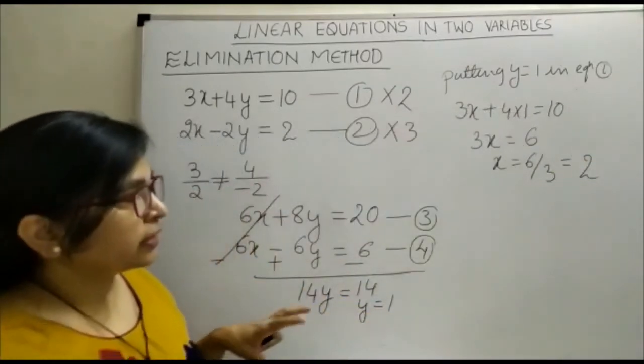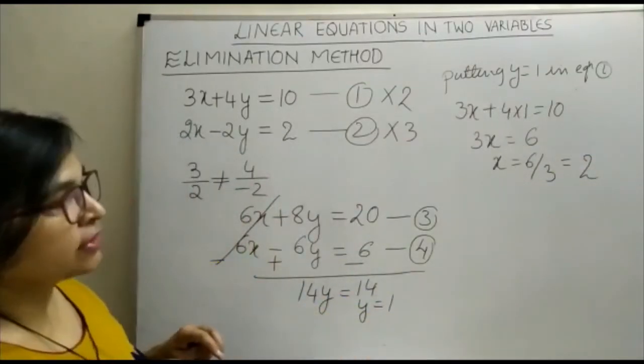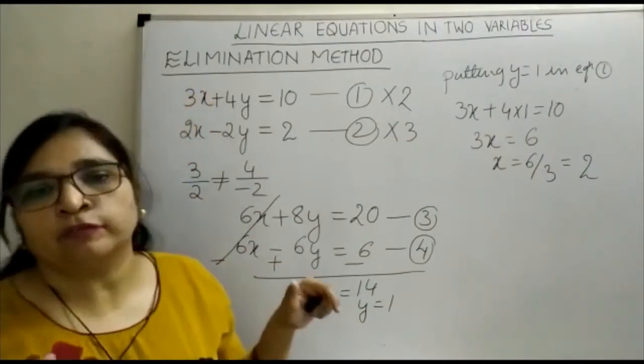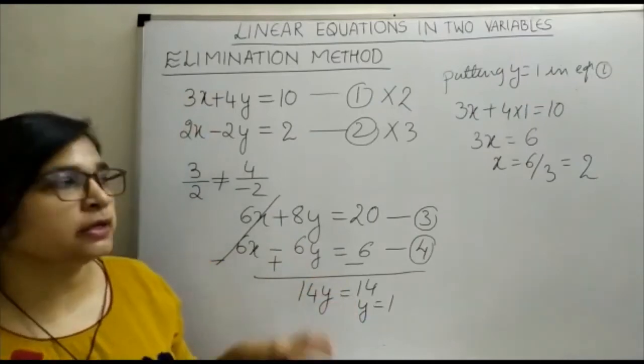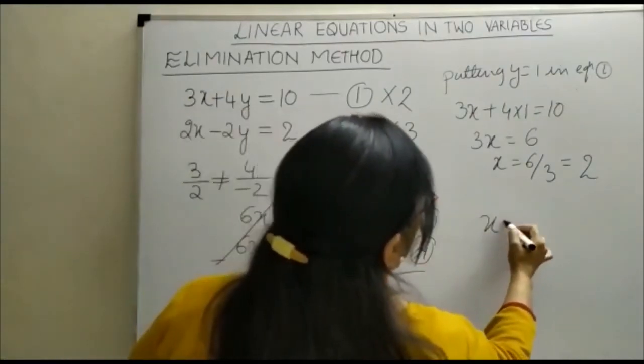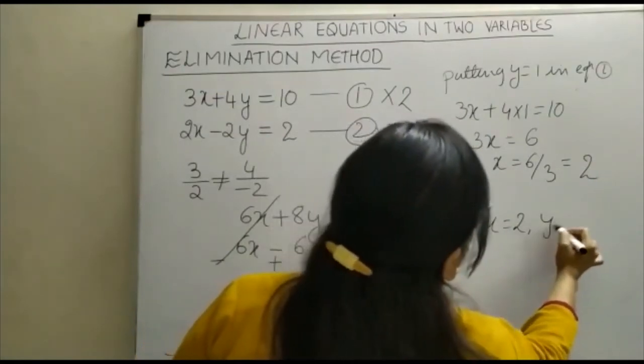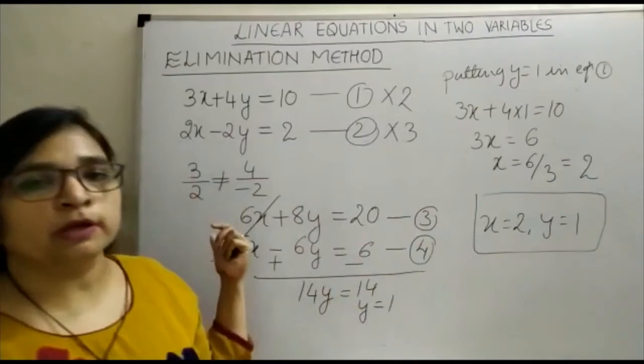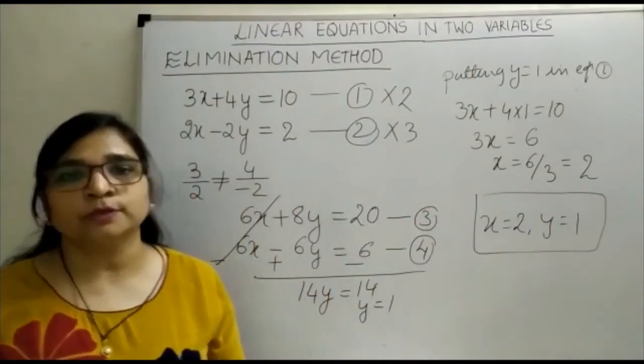So we got the value of x and y. As I told you, if you get this variable y eliminated first, then also there won't be any change in the answer. So here the solution is x is equal to 2 and y is equal to 1 by elimination method for the given pair of linear equations in 2 variables. Thank you.